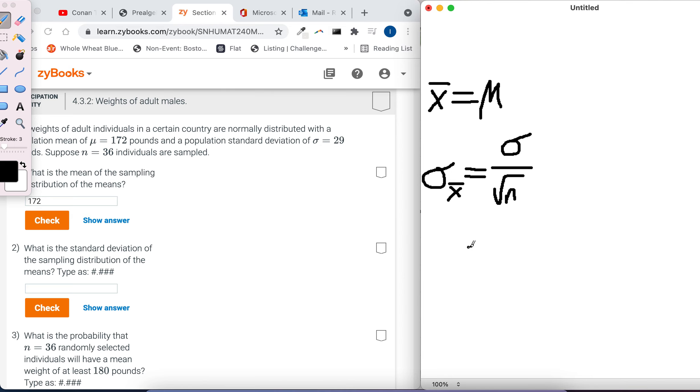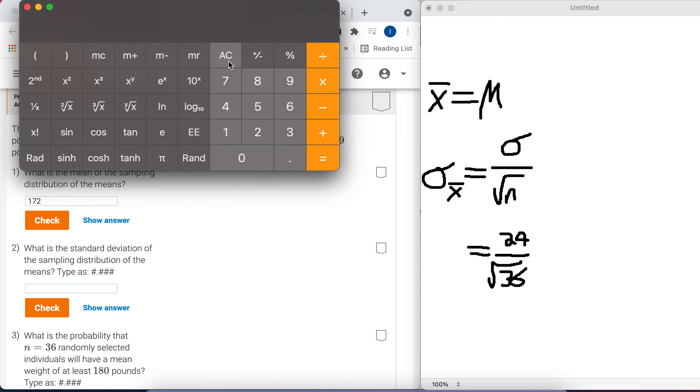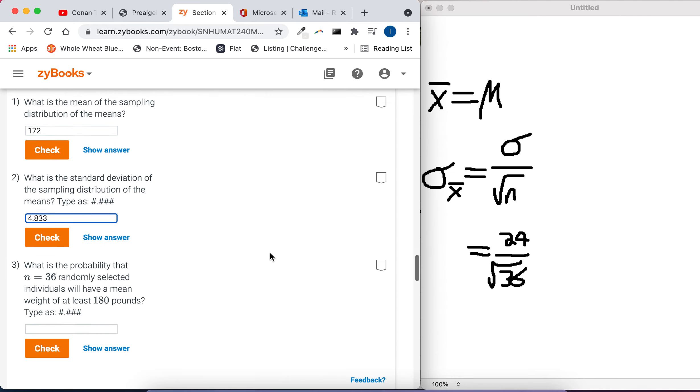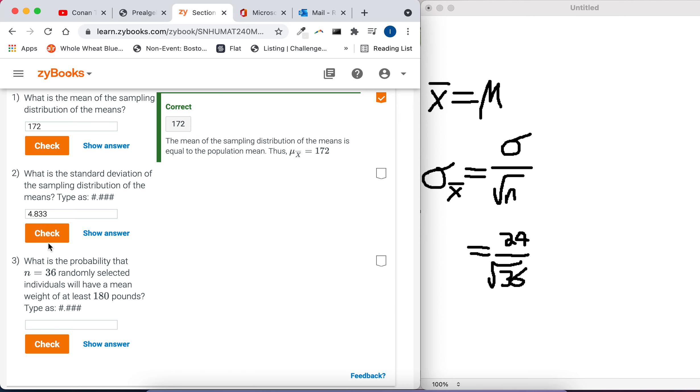So for this problem, our population standard deviation is 29. And the sample size, that's a 9, not a 4. And the sample size is 36. So the square root of 36 is 6. They made that nice and easy for us. So we got 29 divided by 6 makes 4.83 repeating. And it looks like they want three decimal places. So I'm going to type 4.833.